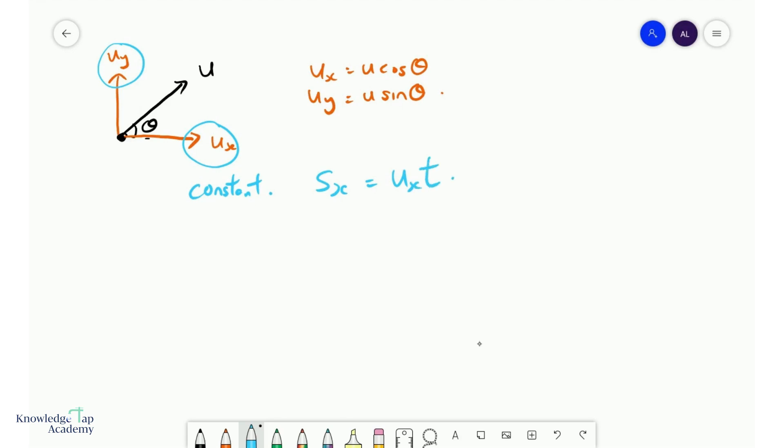However, for this guy, he's in freefall. And so there's a constant downward acceleration. And so we can use our equations of rectilinear motion. And let's just write them down.